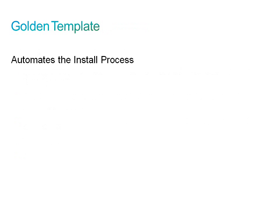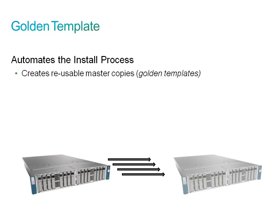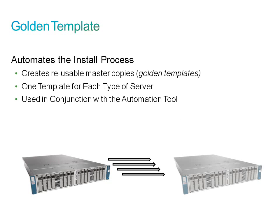Golden templates allow you to create reusable master copies for Cisco Contact Center applications for subsequent cloning and installation on virtual machines for any number of customers. This is often used by integrators that sell large numbers of these deployments. A template must be created for each server type: the Cisco Unified Contact Center Enterprise call and data server, the Cisco Unified Customer Voice Portal call, VXML, and OAMP server, the Cisco Unified Communications Manager, Cisco Unified Intelligence Center, and Cisco Finesse. Once created, templates are used in conjunction with the automation tool to create the final virtual machines.